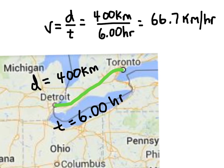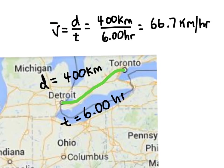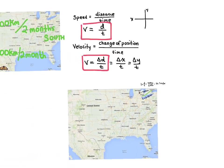Does that mean you were traveling exactly 66.7 kilometers per hour for the whole six-hour trip? No — because you probably had to stop for coffee, stop at traffic lights — so this is actually your average speed. Sometimes average speed is indicated with a line over the V. An instantaneous speed is given by the speedometer of a vehicle. Instantaneous speed takes more mathematical skill, so we won't get into it in this video. That's a quick introduction to speed and velocity.